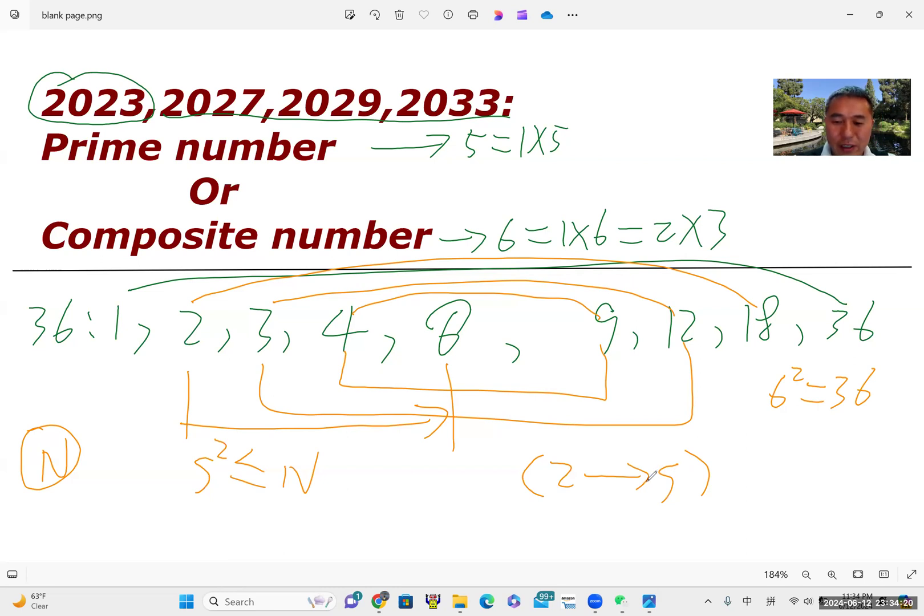So then we just need to judge from two to S to say if there is a factor of the number. And if you can find a factor, then it means N is a composite. Otherwise, N is prime.